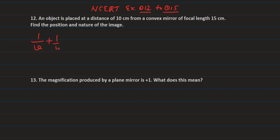In the mirror formula, v is the image distance, u is the object distance — both measured from the pole of the mirror — and f is the focal length. The object is in front of the mirror, so u = -10 cm by sign convention. For a convex mirror, focal length is positive, so f = +15 cm.